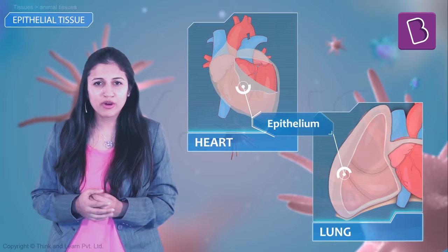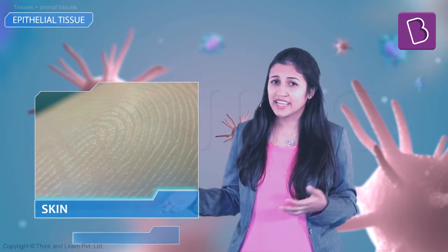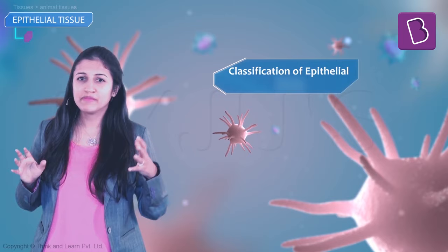Epithelium also forms a barrier to keep different body systems separate, so that they can go about their own function without interfering in other organ system functions. The skin, the lining of the mouth, the lining of the blood vessels, the lung alveoli, and kidney tubules — all of these are made of epithelial tissue.